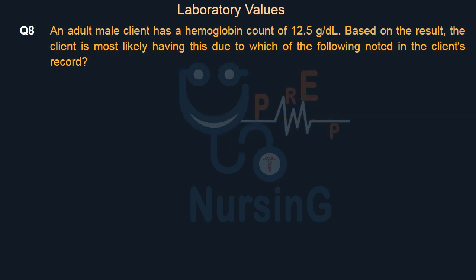An adult male client has a hemoglobin count of 12.5 g/dL. Based on the result, the client is most likely experiencing this due to which of the following noted in the client's record?